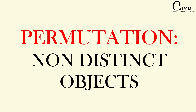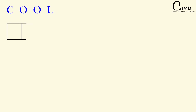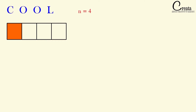Let's begin this lecture with a small example. The example is that we are having the word COOL, that is C-O-O-L, and we have to form the number of four-letter words that we can form from this word COOL. Here the number of given letters is 4, that is N equals 4, and we are having four vacant places, that is R equals 4.